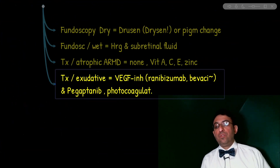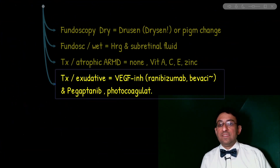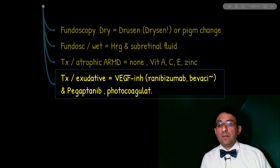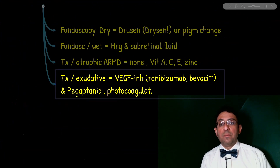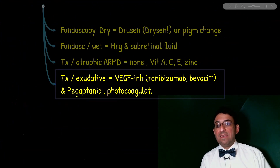Of the three drugs mentioned, pegaptanib can slow visual loss in the exudative type. The other two — ranibizumab and bevacizumab — mainly improve vision.